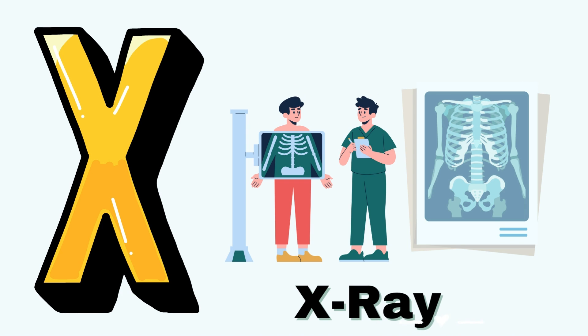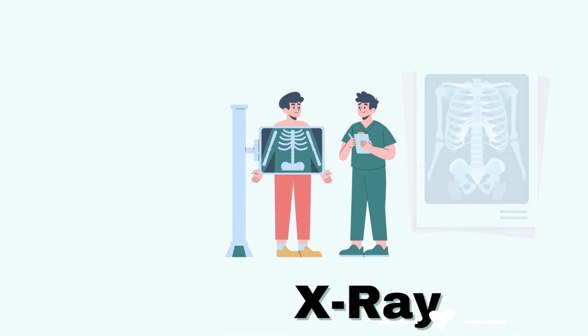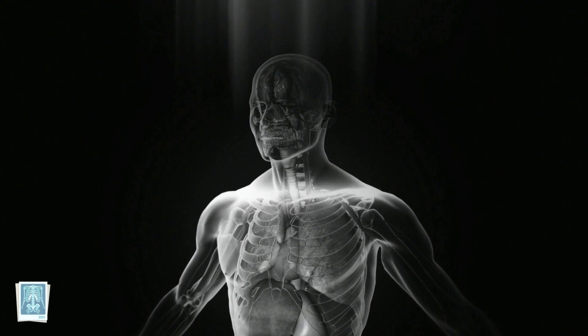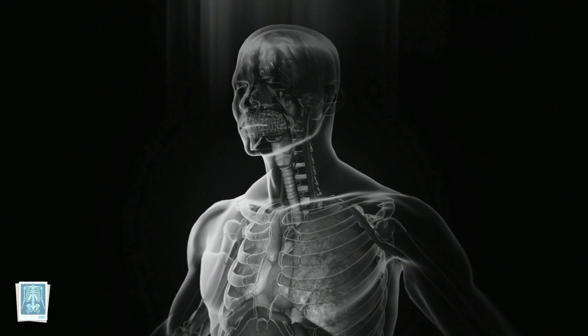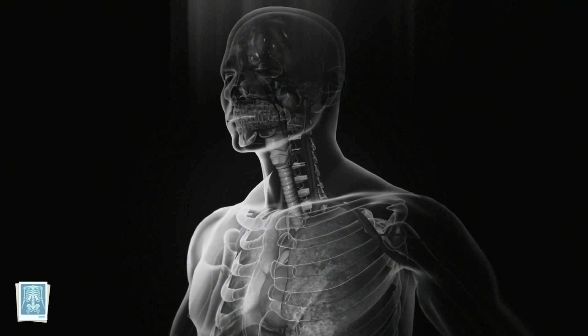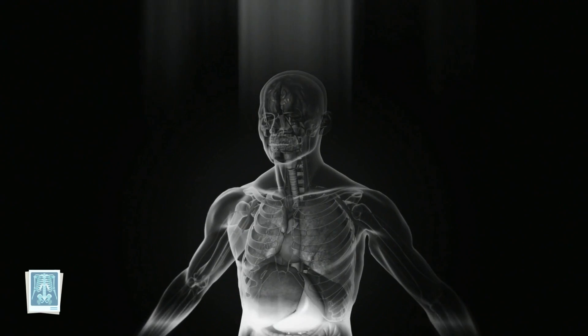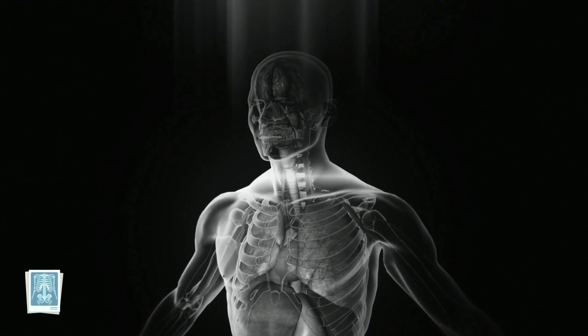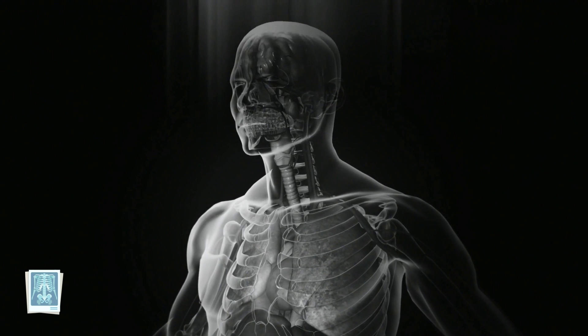X for X-ray. X-rays are a special kind of light. They can pass through things, even out of sight. Doctors use them to see inside. Bones and organs, a helpful guide.